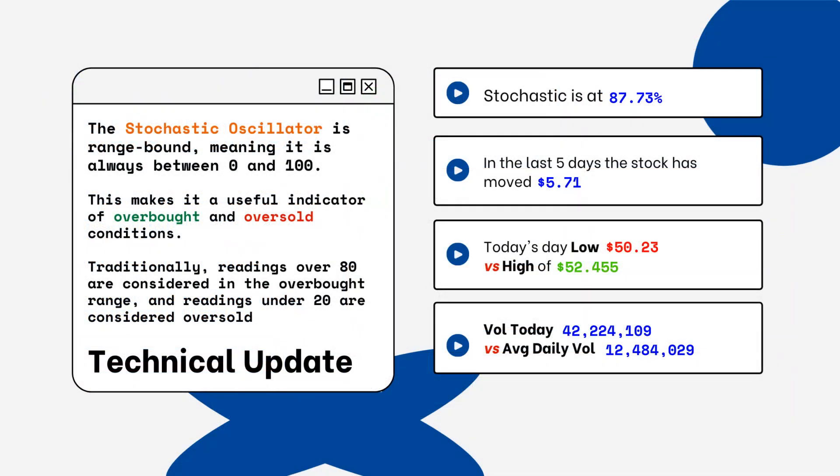You can see on the right side where the stochastic level is on this particular stock. This is a technical indicator you use to look for overbought and oversold conditions. Readings over 80% are considered overbought, and readings below 20% are considered oversold. You want to be aware of this when looking at a particular stock.